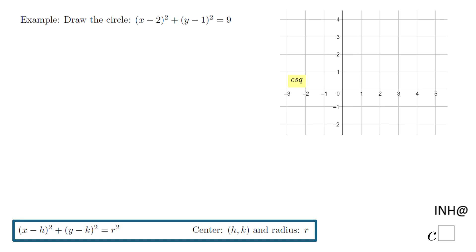Welcome back at I Need Help at C Squared. In this example we need to draw the circle. We know it's a circle, they already told us, that has this equation: (x - 2)² + (y - 1)² = 9.